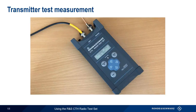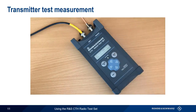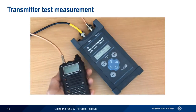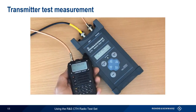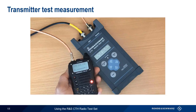To start a transmitter test, connect the radio under test to the CTH radio connector and an antenna or dummy load to the CTH antenna connector. When the attached radio is keyed, frequency, forward power, and reverse power or VSWR are automatically and continuously measured and displayed.